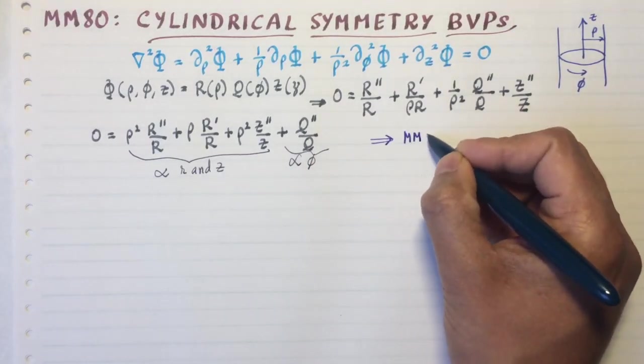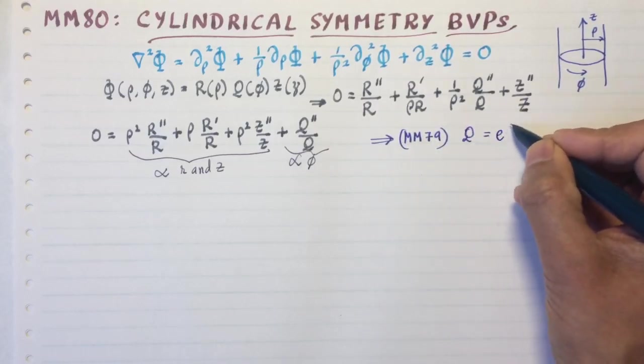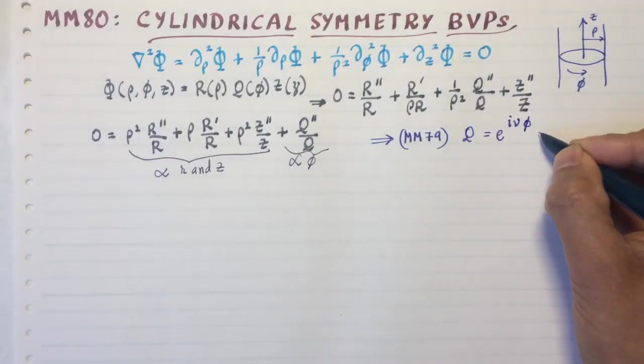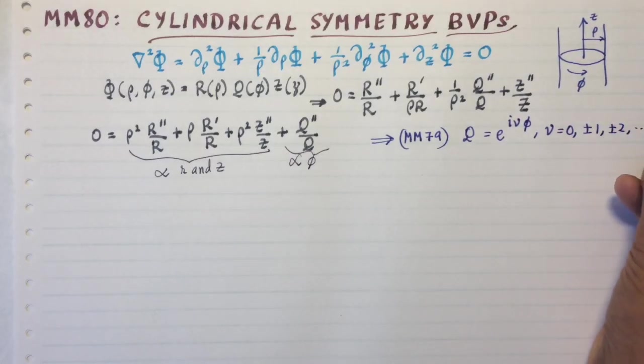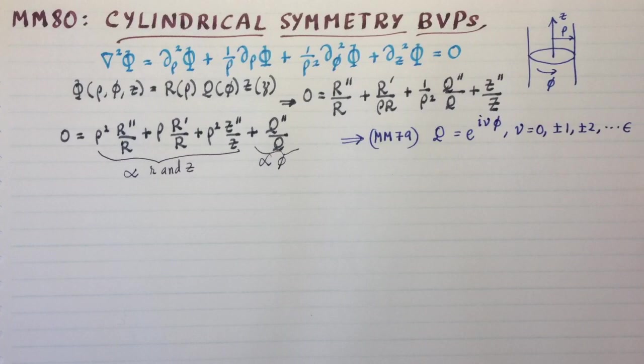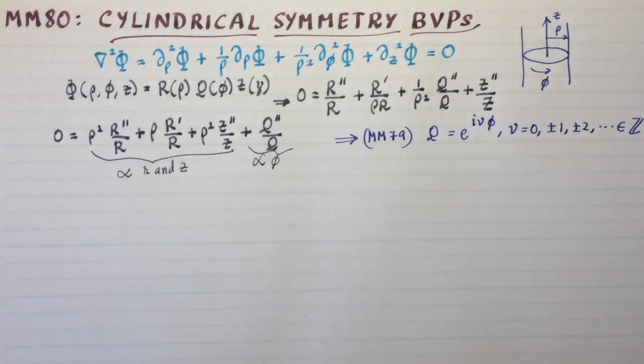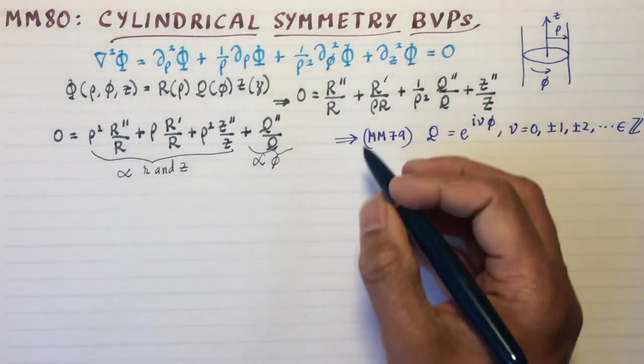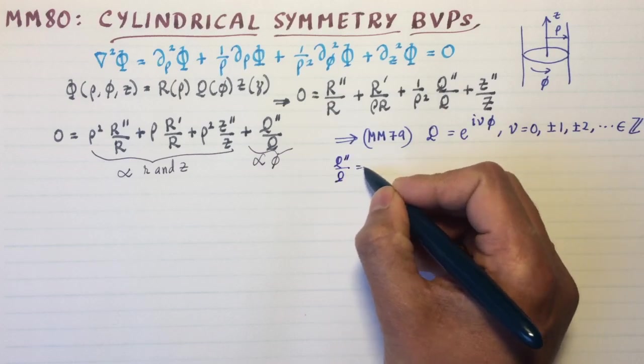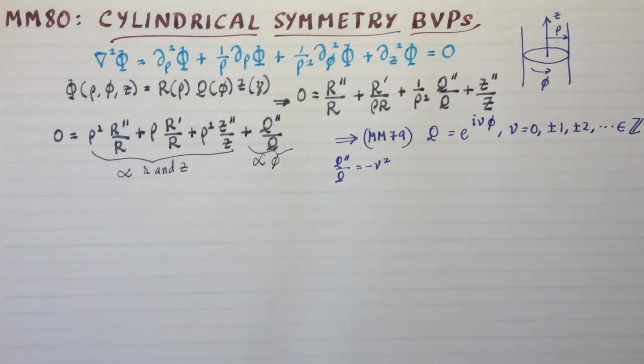And I will refer you to MM79 for this. We can write Q as equal to e^(iνφ). You'll understand why I'm using ν very soon. So I'm using ν, actually I'll just tell you right now, because you'll end up getting the Bessel function of order ν very shortly from the radial equation. So once you have this equal to -ν², so this comes from setting Q''/Q equal to -ν², that's what gives you the periodic or sine and cosine solutions that are captured in the Euler's representation.